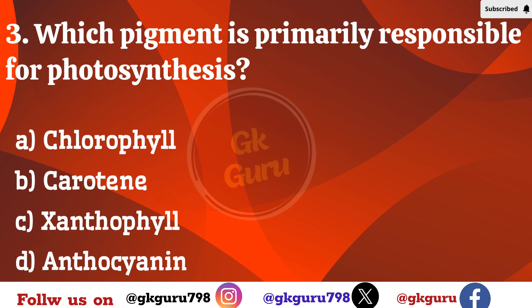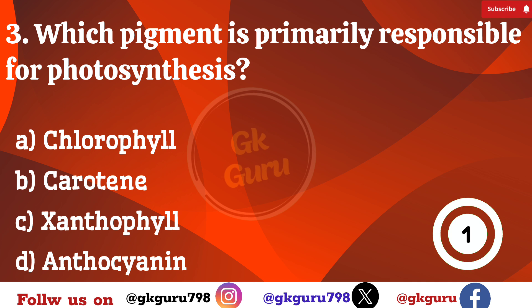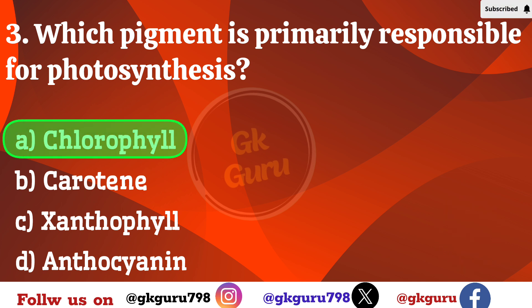Third question: Which pigment is primarily responsible for photosynthesis? Option A: chlorophyll. Option B: carotene. Option C: xanthophyll. Option D: anthocyanin. Correct answer: Option A, chlorophyll.